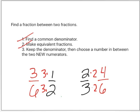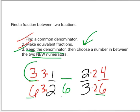Step number three says keep the denominator. I'm going to keep six. Now choose a number in between your two new numerators. I need a number between three and four. Uh-oh. There isn't a number between three and four, so this isn't going to work.